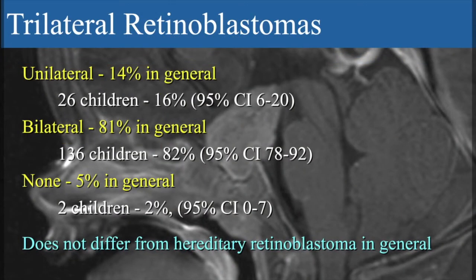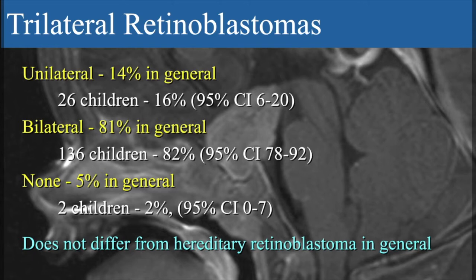Is trilateral retinoblastoma different from the usual hereditary form? It's not. According to the literature, you have unilateral disease in approximately 14% of cases as an aggregate of several studies. You have unilateral retinoblastoma with a trilateral tumor in 16%, bilateral in 81% of cases, and bilateral with trilateral in 82%. No tumor in the eye — the asymptomatic carriers — and 2% with trilateral tumor only. So there is no difference in the phenotype of the eyes.